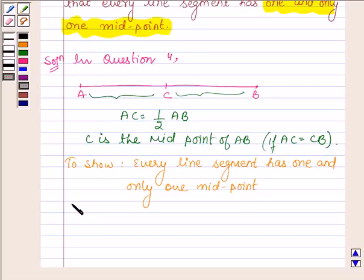So, let us suppose this line segment AB has two midpoints. Let D be a point which is a midpoint of AB.